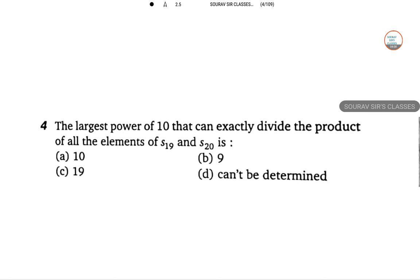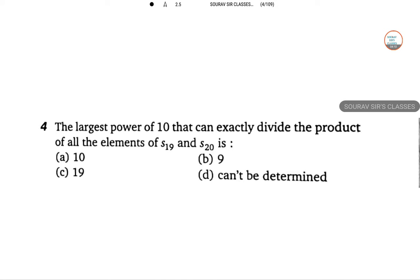Question 4. So this is also associated with this, the power of 10 that can exactly divide the product of the first S19 and S20. So number of zeros in the product of S19 and S20 depend on the number of 5s contained into this. And remember that if 5 is there, then 2 is also there.